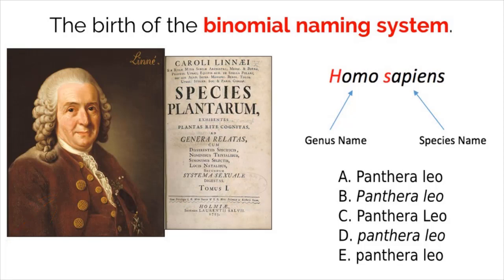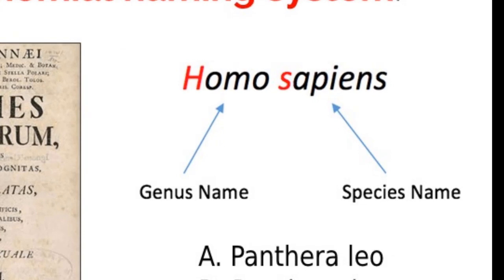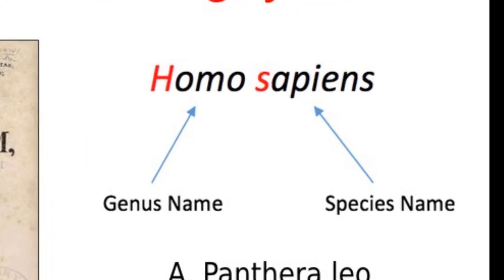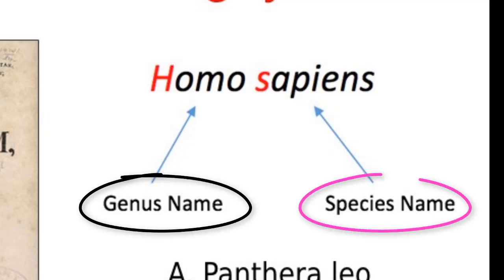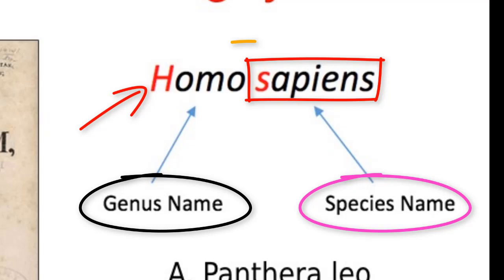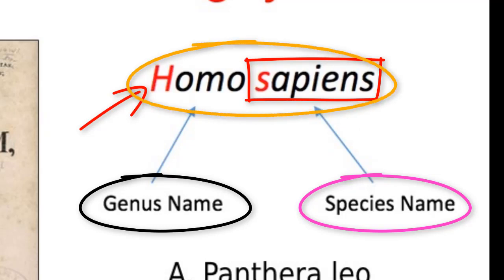This system requires each individual species to have a two-part name with very distinct formatting, allowing each organism to have a unique name that also classifies their relation to other organisms. A name written in scientific nomenclature uses the genus name and the species name of that organism. The first letter of the genus name is always capitalized, while all letters of the species name are lowercase. If it is being typed, all letters must be italicized, and if it is written, all letters must be underlined.